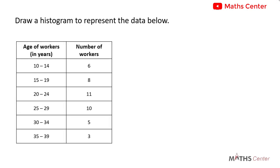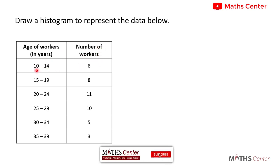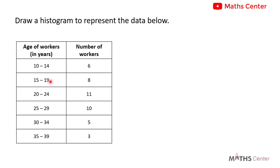Let's consider the question we have here. The question says we should draw a histogram to represent the data below. In the table we have the ages of workers in years and the number of workers, or the frequencies. The ages have been given to us in intervals, so this is clearly a grouped data. We are going to draw a histogram to represent this data.